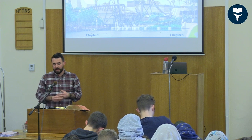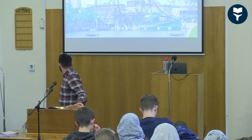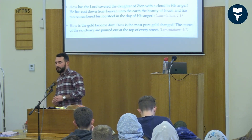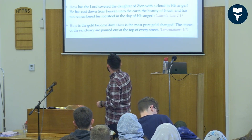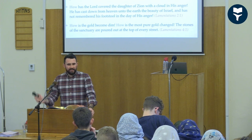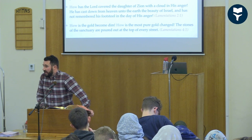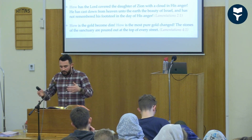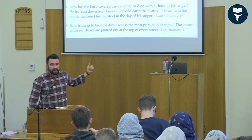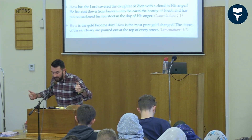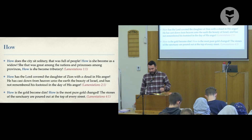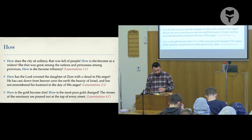Chapter four follows a similar pattern to chapters one and two. Chapters one, two, and four all begin with the word 'How' — 'How is the city sitting alone,' 'How has the Lord covered the daughter of Zion,' 'How has the gold become dim.' This word 'how' is used as an exclamation of how desperate the situation is — not seeking purpose, not turning to God, just saying: look how bad it is. And chapter five is a structural mess — the final verse shows people feeling rejected by God because of his anger against their sin.